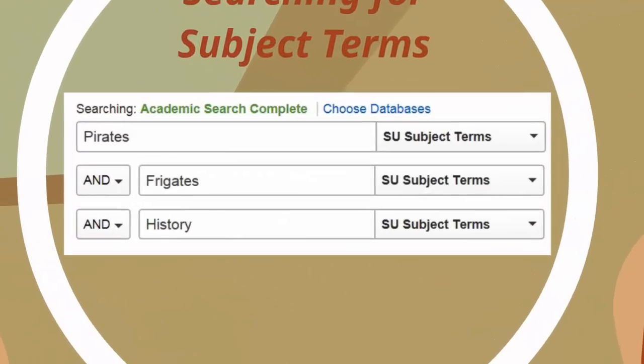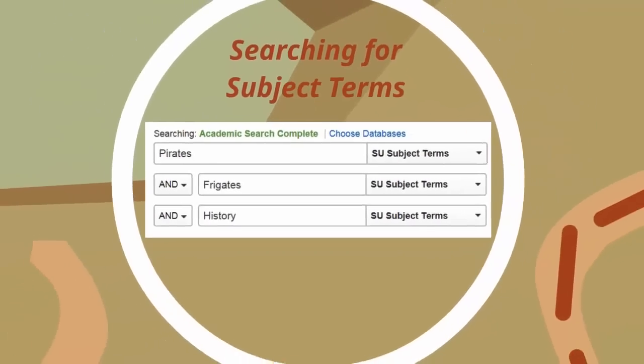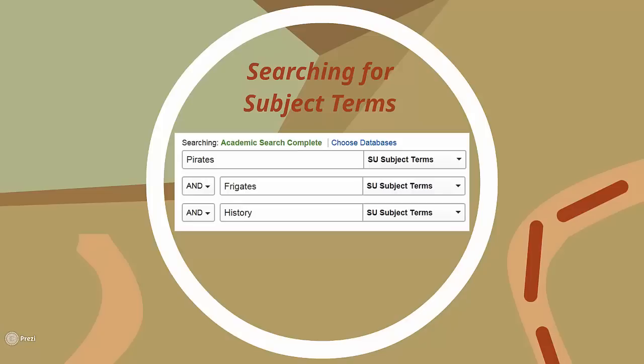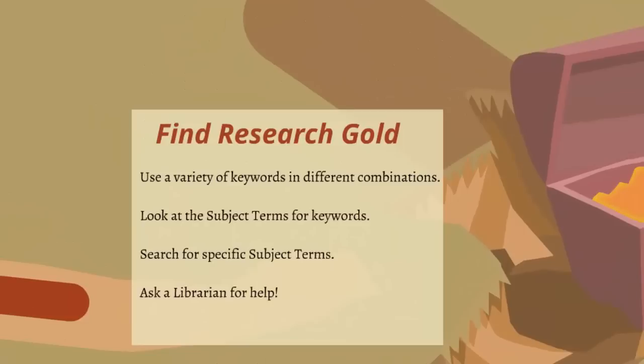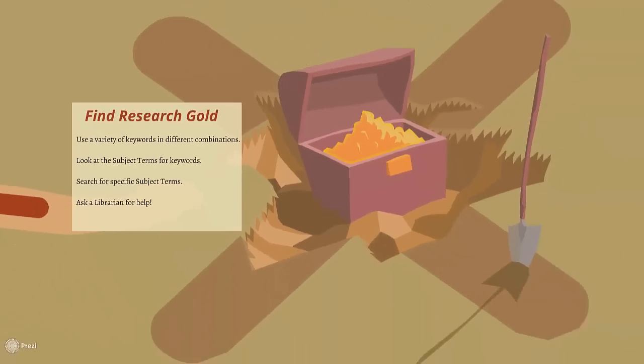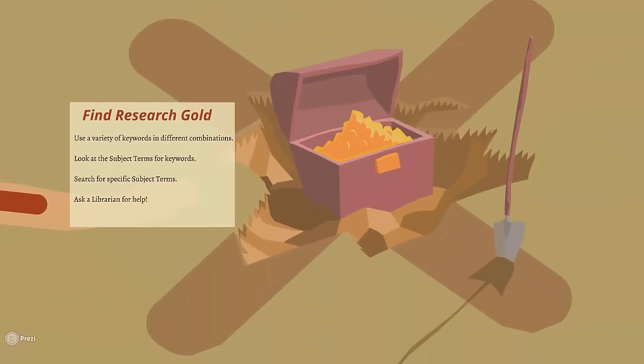Just remember that you need to use the words and phrases that have been defined as subject terms in the database for this to work. Trying a variety of keywords in different combinations along with subject terms should help you find research gold in most databases or book catalogs. As always, librarians are available to help, no matter how buried the resources seem to be.